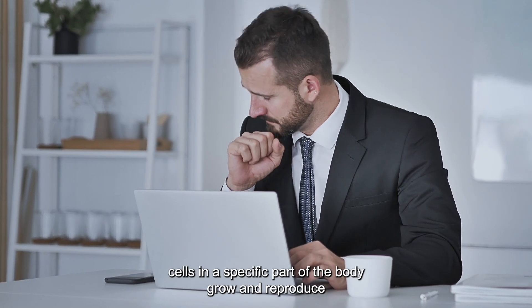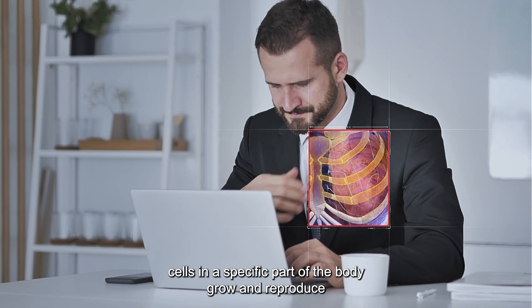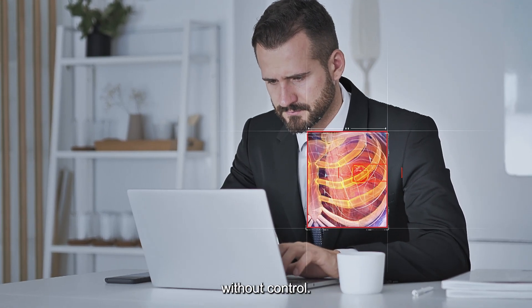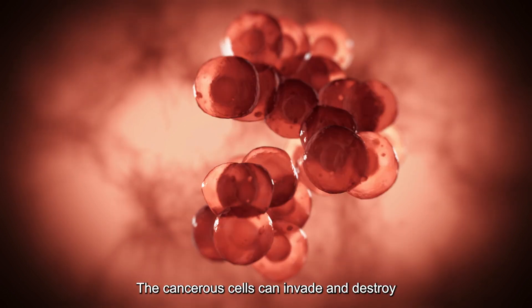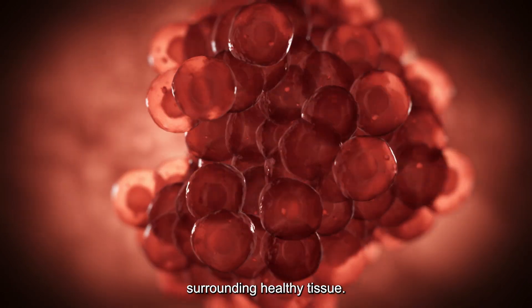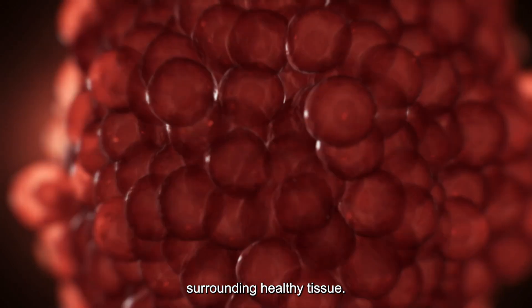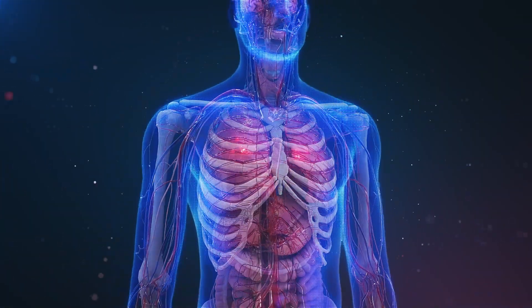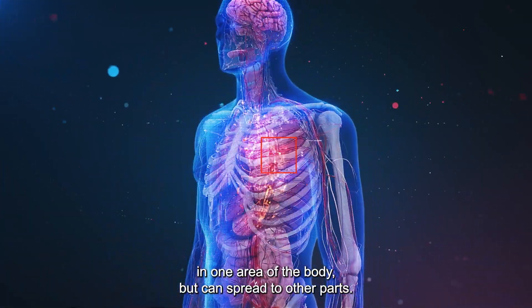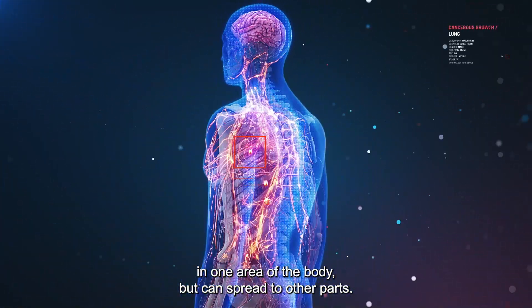In cancer, cells in a specific part of the body grow and reproduce without control. The cancerous cells can invade and destroy surrounding healthy tissue. Cancer often begins in one area of the body, but can spread to other parts.